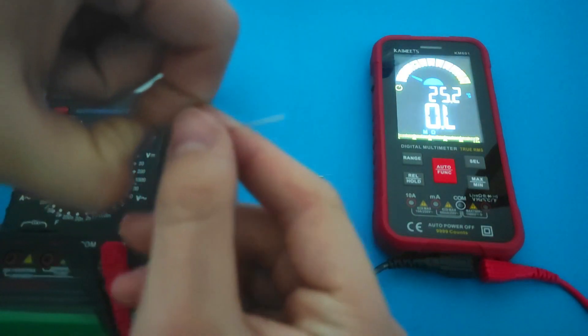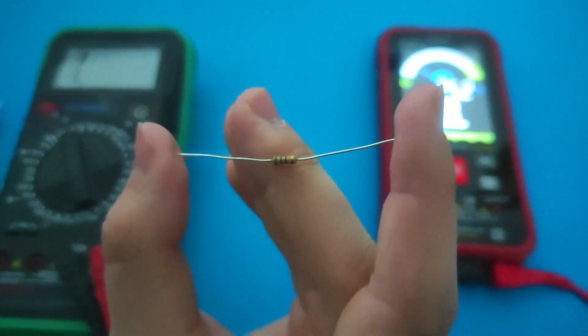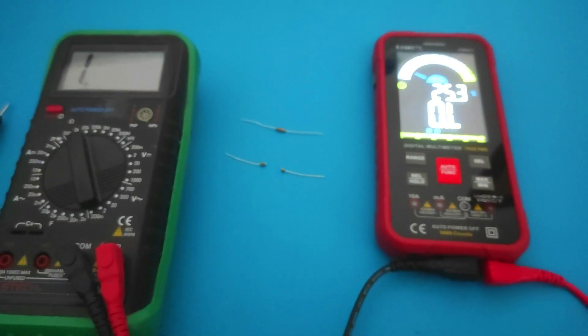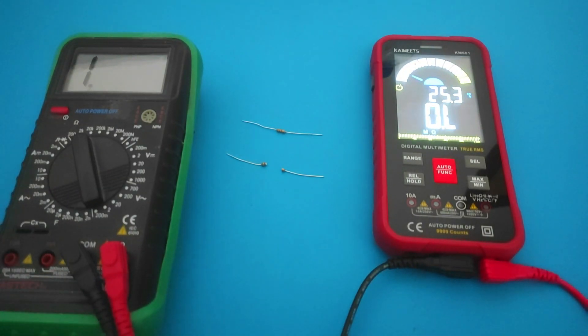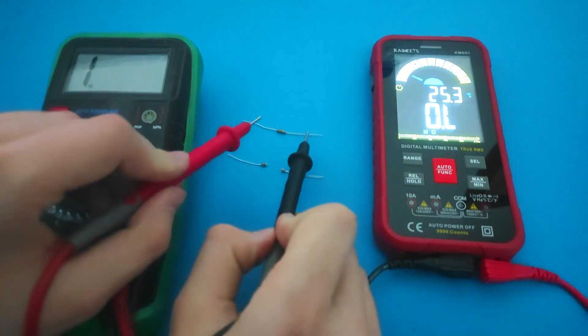In this example, we will use two resistors: one that is normal and the other that has been cut in half to demonstrate how OL occurs when the resistance is too high or infinite. If the multimeter displays an OL reading, then there is infinite resistance between the two points you are testing.